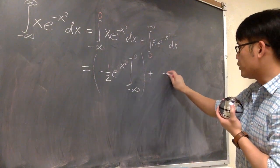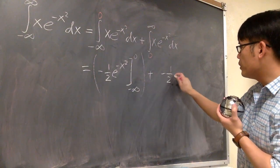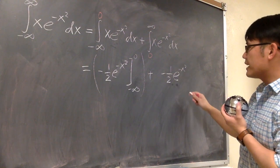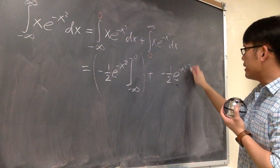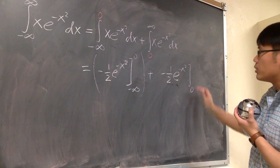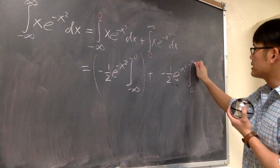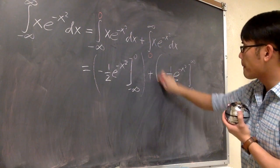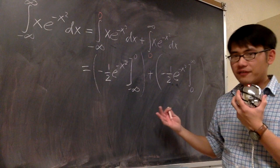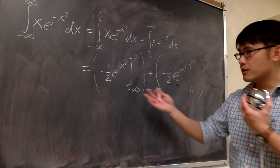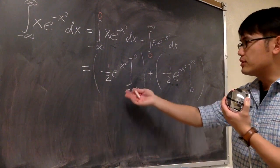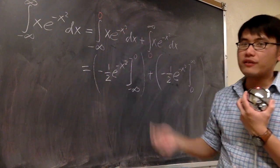And for the second part, we use the same antiderivative — negative one-half e to the negative x squared — evaluated from zero to positive infinity. Hopefully we get a finite answer from both; if not, the integral diverges.